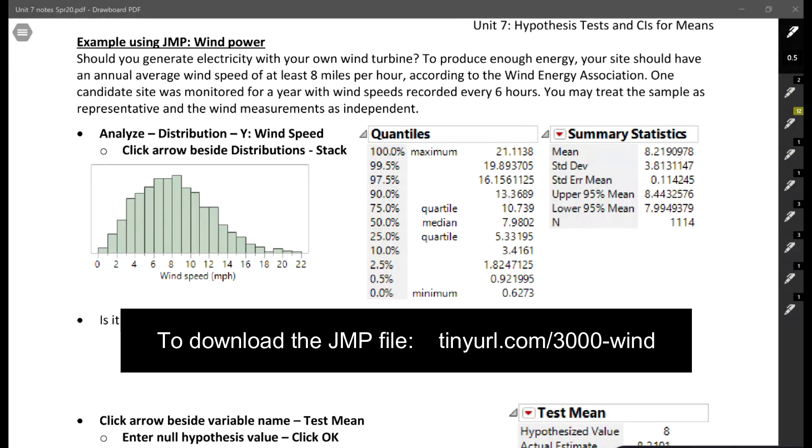This example is about wind power. Should you generate electricity with your own wind turbine? To produce enough energy, your site should have an annual average wind speed of at least eight miles per hour, according to the Wind Energy Association. One candidate site was monitored for a year with wind speeds recorded every six hours, and we can treat the sample as representative and each measurement as independent.